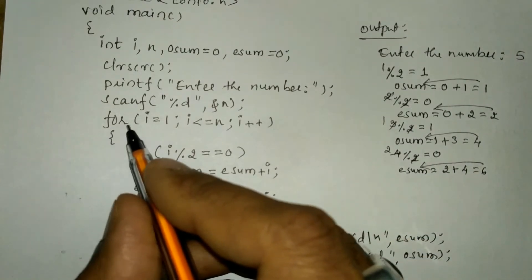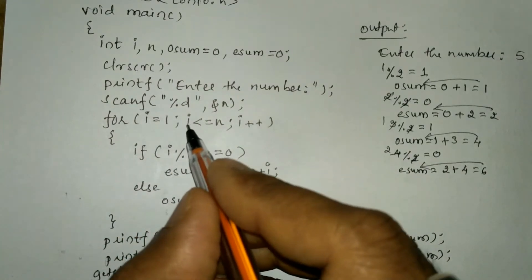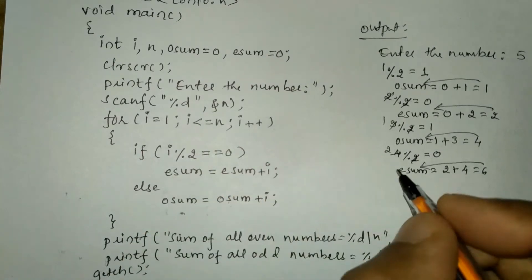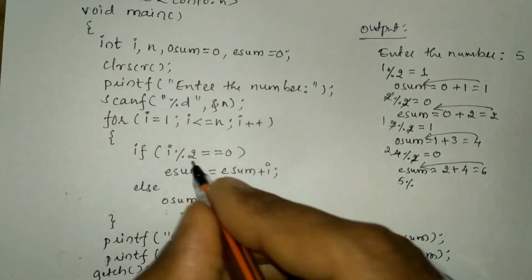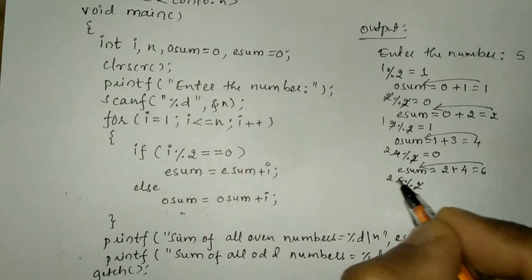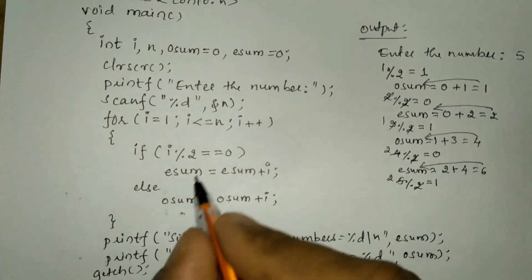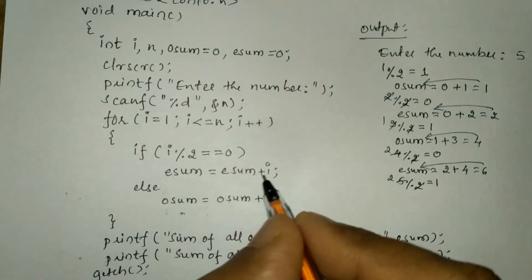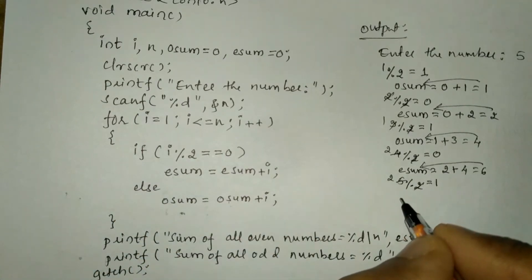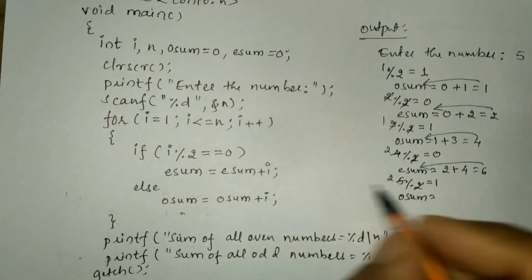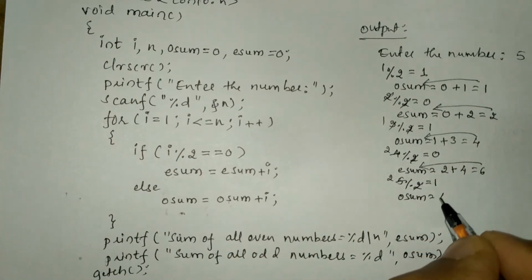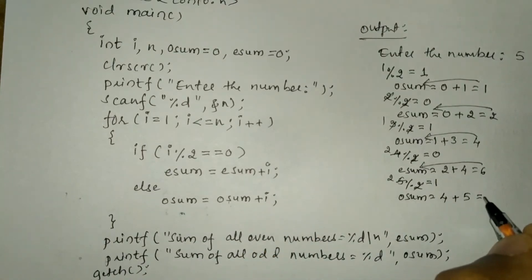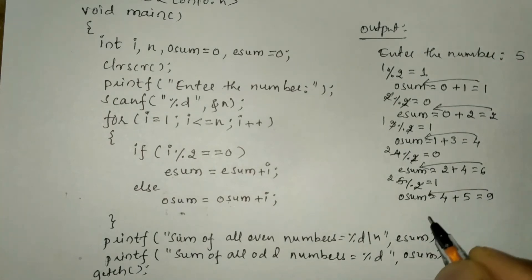Now i = 5. 5 is less than or equal to 5 — condition is true. We check: 5 modulo 2 — 2 twos are 4, remainder is 1, which is not equal to 0 — condition is false. Control transfers to the else part: osum = osum + i = 4 + 5 = 9. So 9 is stored in osum. Control returns to the for loop, incrementing i to 6.